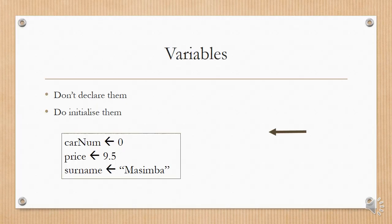When you use variables in an algorithm, don't declare them. You do initialize them though. Some examples are: carNum gets the value of zero — this is called an assignment because we are putting the value zero into the variable called carNum. Price gets the value of 9.5, and Surname gets the value Masimba. From the type of data stored in the variable, the programmer who gets your algorithm will know what sort of variable it is. Note that the arrow goes from the value towards the variable because we are storing the data in that variable.